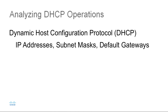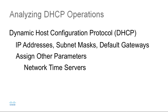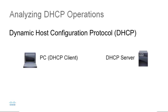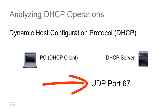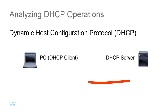DHCP not only dynamically assigns IP addresses, subnet mask, and default gateway, it can also assign other parameters such as network time servers and domain name servers. DHCP uses UDP as the transport mechanism with UDP port number 67 as the destination port directed to the DHCP server. UDP port 68 is used by the DHCP client requesting the IP address.